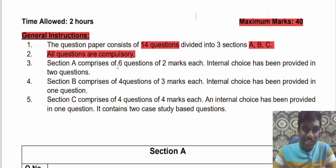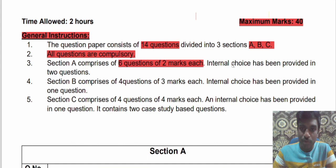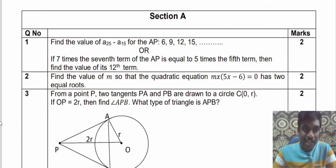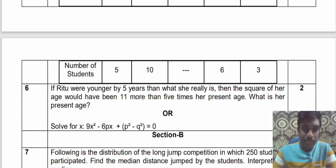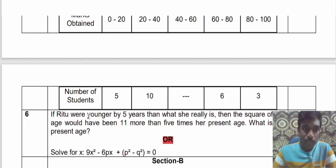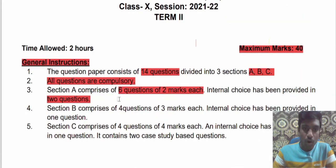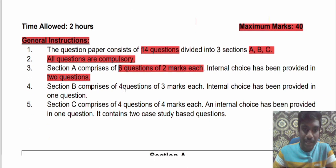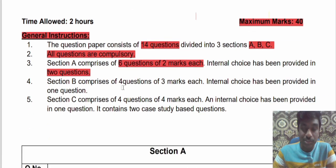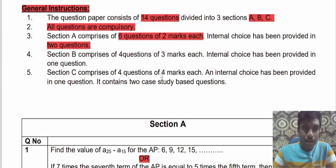Section A has 6 questions of 2 marks each. All 6 questions carry 2 marks each and internal choice has been provided in 2 questions. In the first question there is one internal choice and in the 6th question there is one internal choice. So out of 6 questions, all are compulsory, but in 2 questions you get the internal choice.